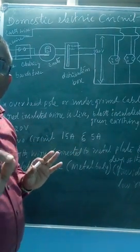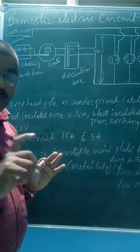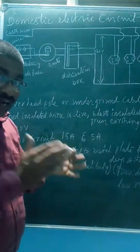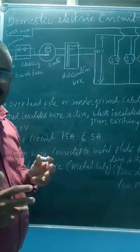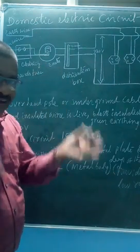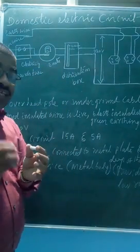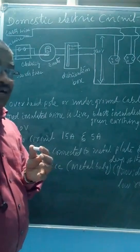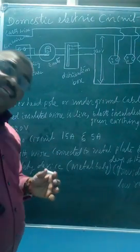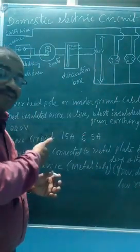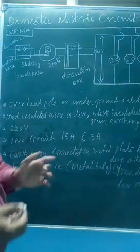So where do we use DC? DC is nothing but accumulators, like a battery — vehicle battery or mobile battery. These batteries use DC. DC cannot be transmitted over longer distances. But AC can be transmitted. That means in our houses we are using AC. Remember, we are using AC.